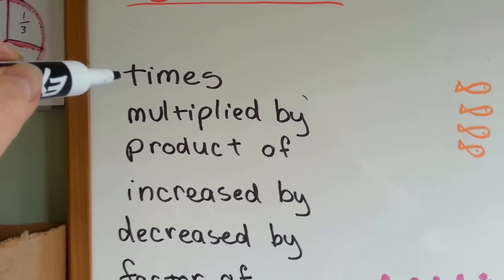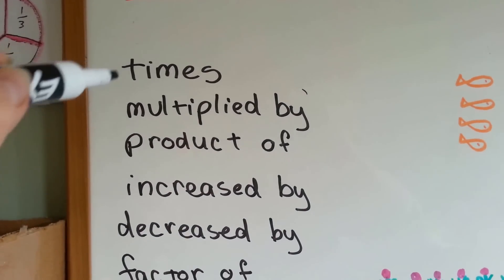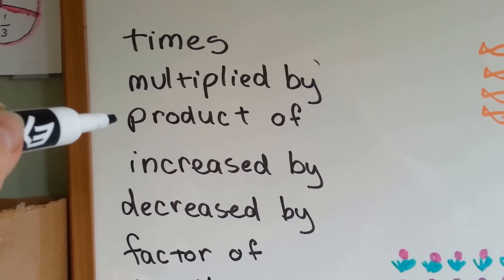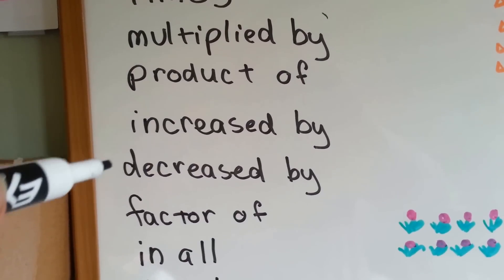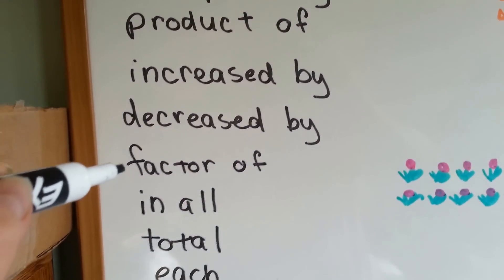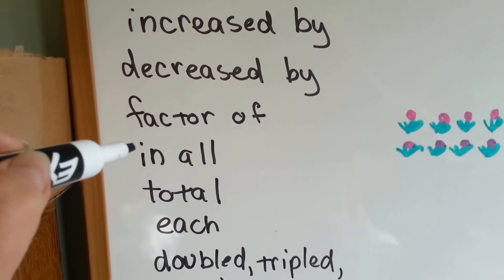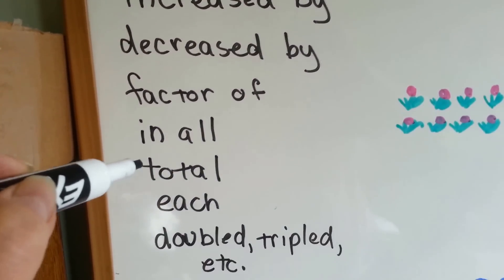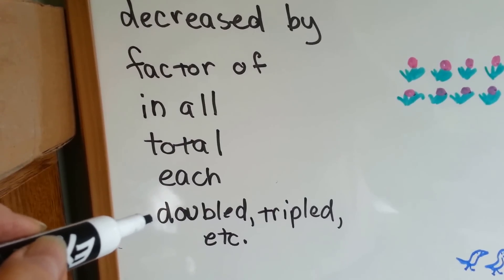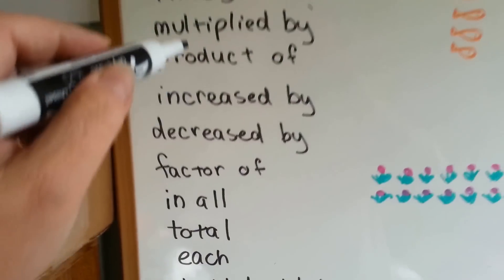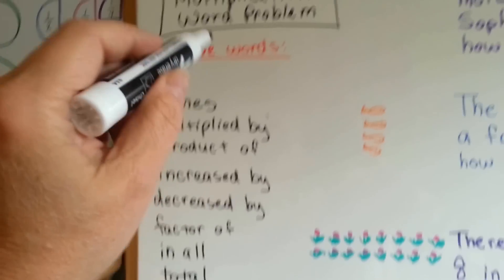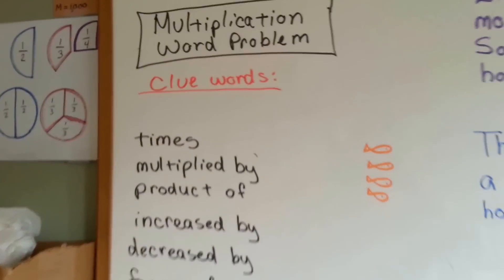In the word problem, if you see the word times, multiplied by, product of, increased by, decreased by, factor of, in all, total, each, or double, tripled, quadrupled — then these are clue words that the word problem is going to be a multiplication problem.